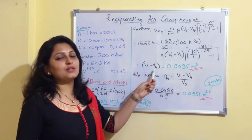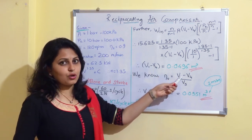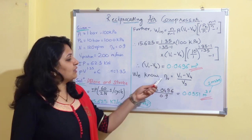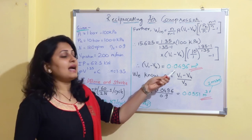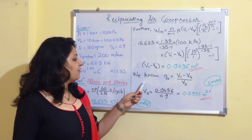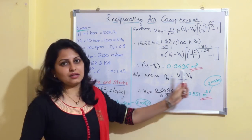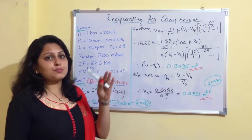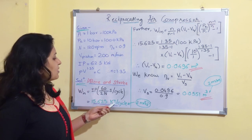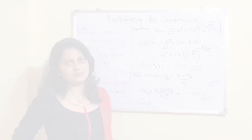Using the volumetric efficiency formula — effective swept volume divided by swept volume — and substituting the known values, we get swept volume = 0.0551 m³. If this problem is asked for 10 marks, the indicated work input carries 2 marks and the swept volume carries 2 marks.